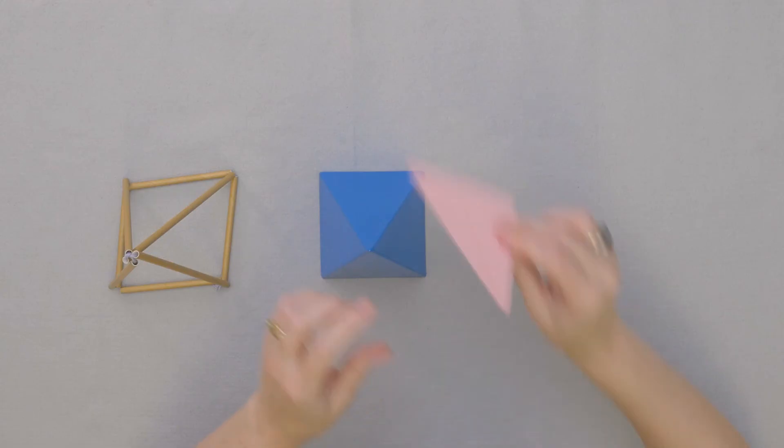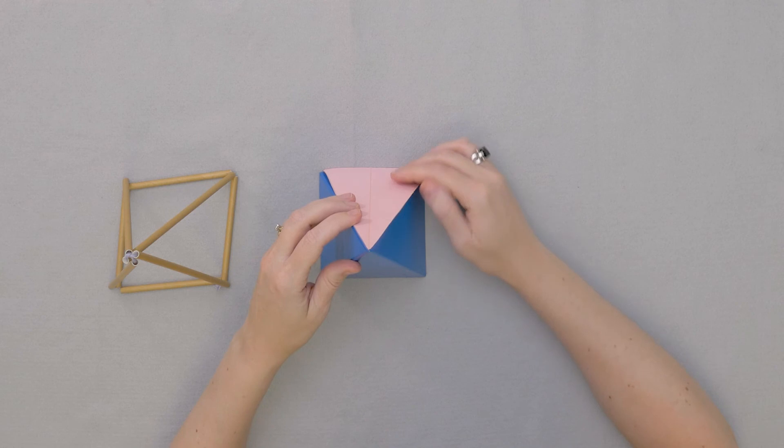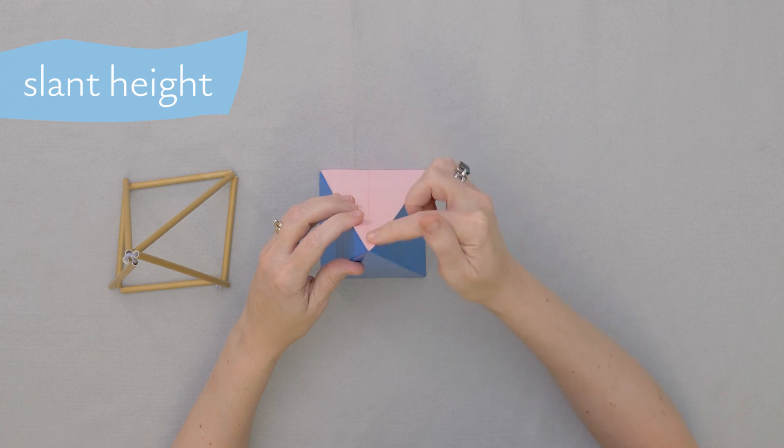This height along the outside of the space is called the slant height. It slants. So it is the slant height of our solid.